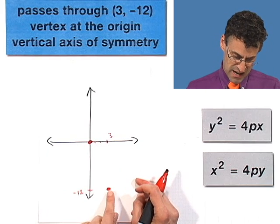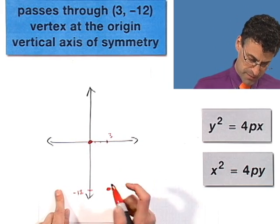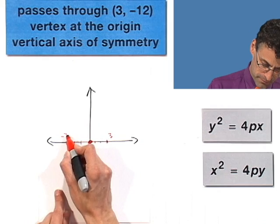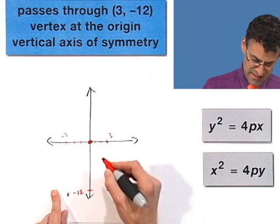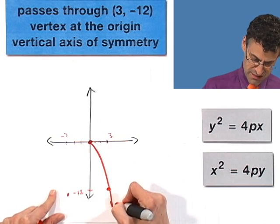That means that the axis of symmetry must be the y-axis. Which means that since I have this point here, I must have a corresponding point at negative 3.